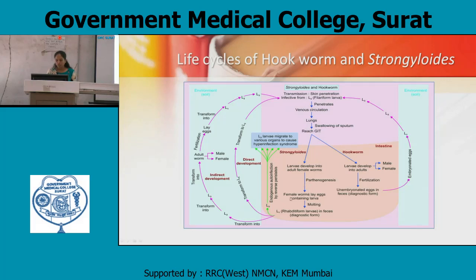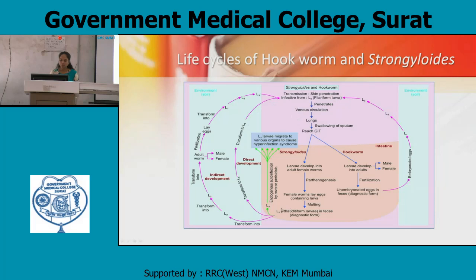Endogenously, autoinfection is caused by reverse peristalsis. L3 larvae migrate to various organs to cause hyperinfection. L1 is also transformed into L2, then directly into L3, and skin penetration occurs — cycle is repeated. In the third pathway, L1 transforms to L2, then L3, then adult worm. Fertilization occurs and eggs are laid, transferring to L1, L2, L3 in the soil or environment. Transmission is through skin penetration by the infective L3 filariform larva, and the cycle is repeated.